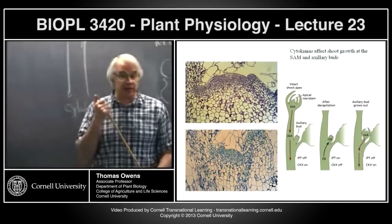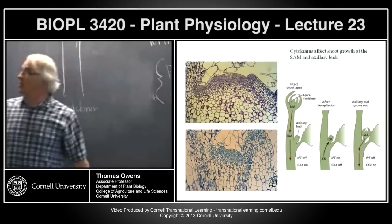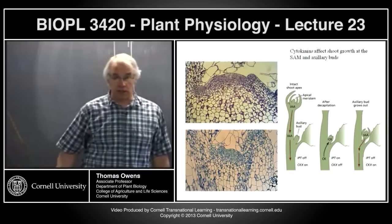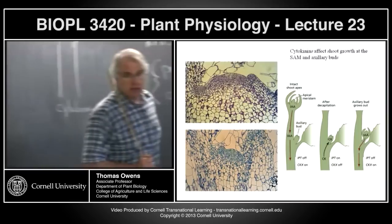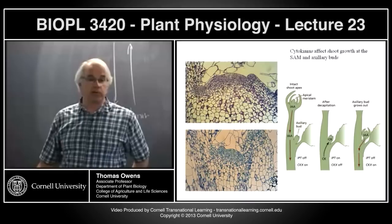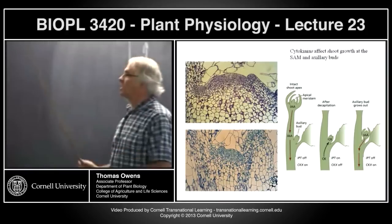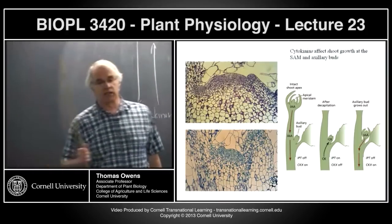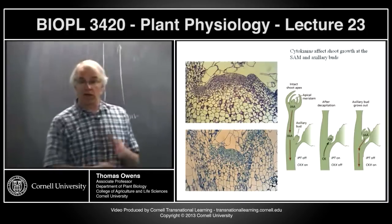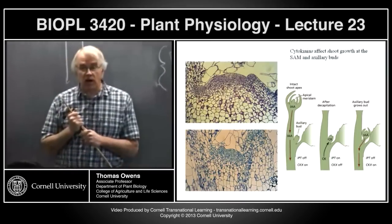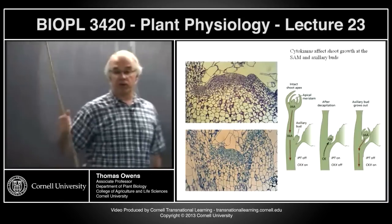Going back to apical dominance — when we talked about auxins, auxin being transported down the stem was thought to inhibit growth of the axillary bud. When you cut off the shoot apical meristem, stopping this flow of auxin, the initial assumption was lower auxin triggered axillary bud growth. But that turns out not to be the case — when the axillary bud starts to grow, the auxin level goes up substantially. So it's not low auxin that's turning on growth but high auxin.